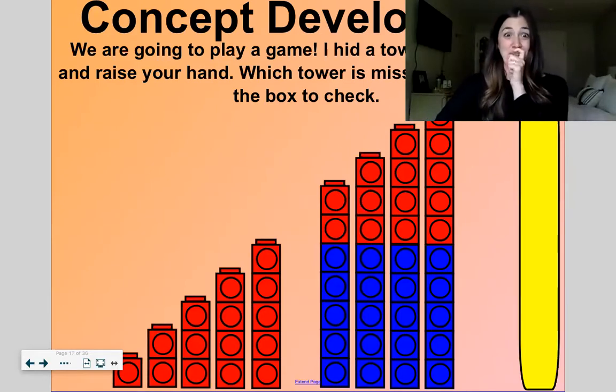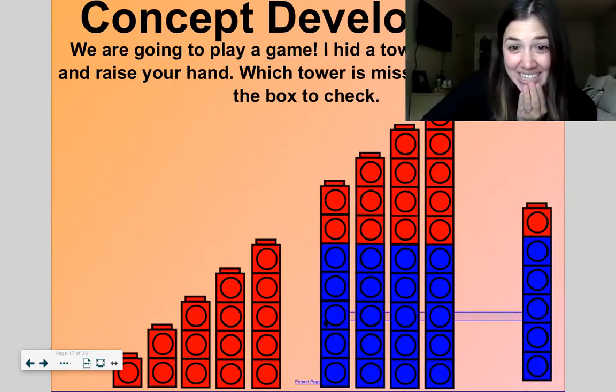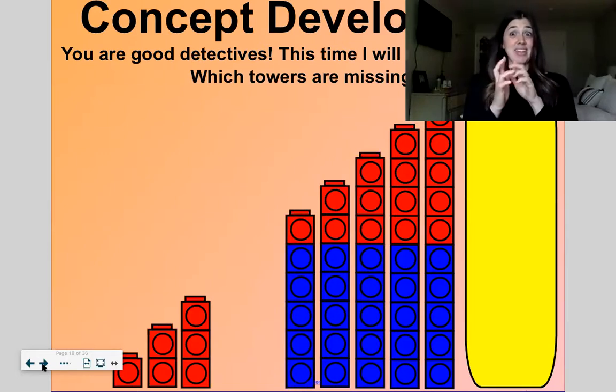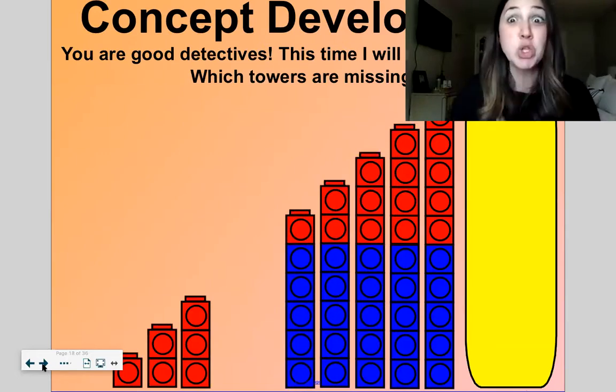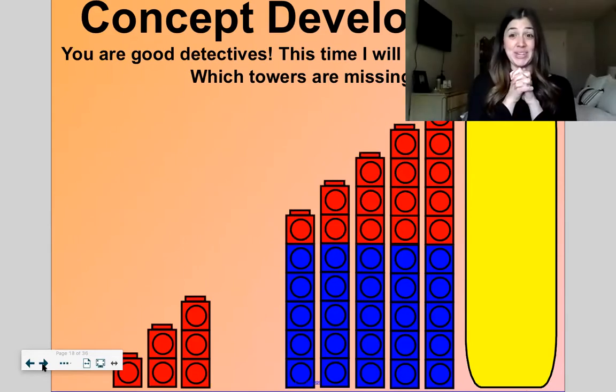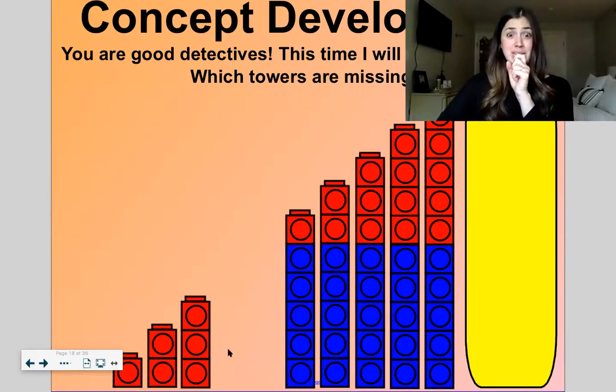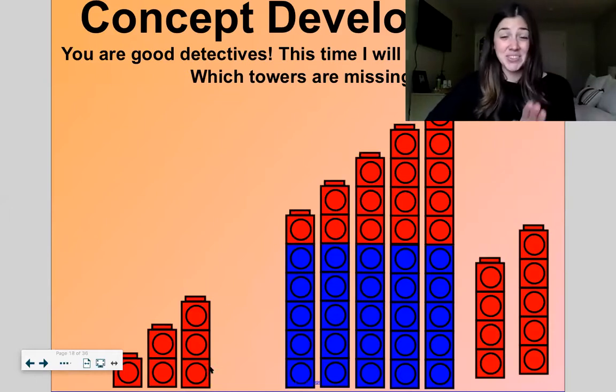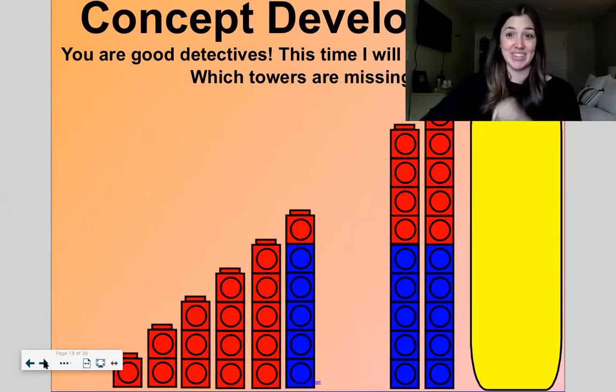One more like this and then we're going to do it a little harder way. What's missing? Six. Good. Six goes right there. All right. Now, this time I hid two towers. Which towers are missing? Let's see. I have one, two, three, and then I don't see another tower until six. So what's missing? Four and five. One, two, three, four, five. Good. Let's do another one like this.